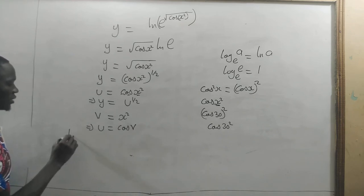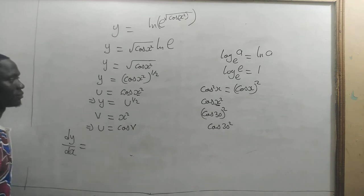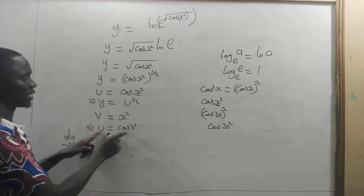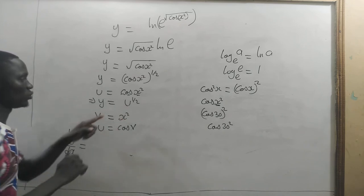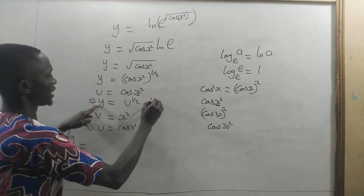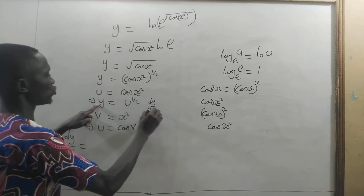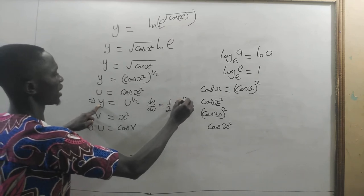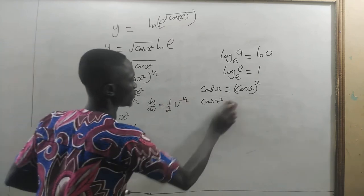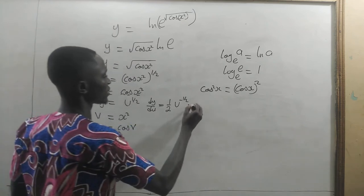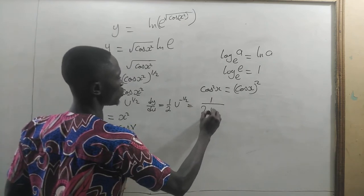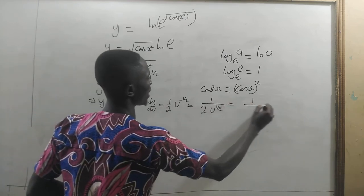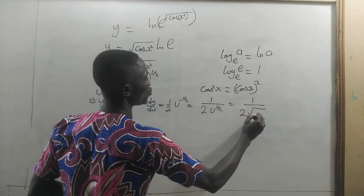Now, we'll find the derivative of this multiplied by that and multiplied by that in this here. So the derivative of y with respect to u is equal to half of u to the power negative 1 out of 2. And that will give us half divided by u to the power positive half. This will give us 1 divided by 2 root u.